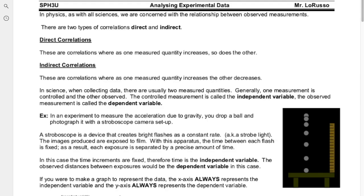In this next note, we're going to talk about specifically techniques involved in analyzing experimental data. The main thing we're trying to do in any type of experimental discipline is we are looking for correlations. There are technically three types: we're looking for direct, indirect, or if there is no correlation at all — and that's a possibility too.